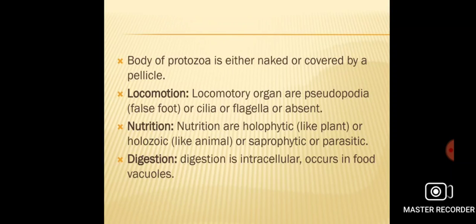Holophytic means plant-like nutrition. For example, Euglena has green-colored pigment chlorophyll and can prepare its own food material in a plant-like manner. Such nutrition seen in Euglena is called holophytic. Some protozoans are saprophytic and some are parasitic.